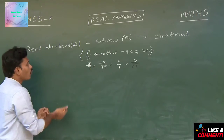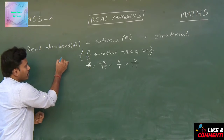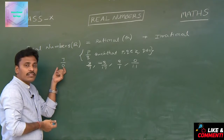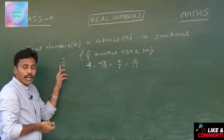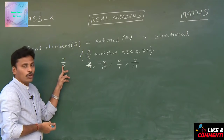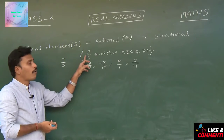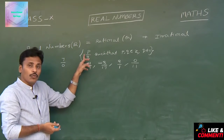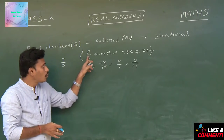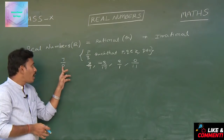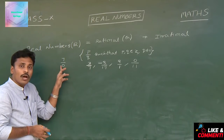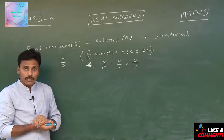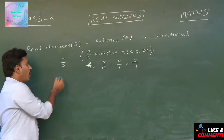Now consider the number 7 divided by 0. Looking at 7 by 0, the denominator Q is 0. Rational numbers are numbers of the form P by Q where Q cannot be 0. But here for 7 by 0, the denominator Q is 0, so this is not satisfying the general form of rational. That is why 7 by 0 is not a rational number.